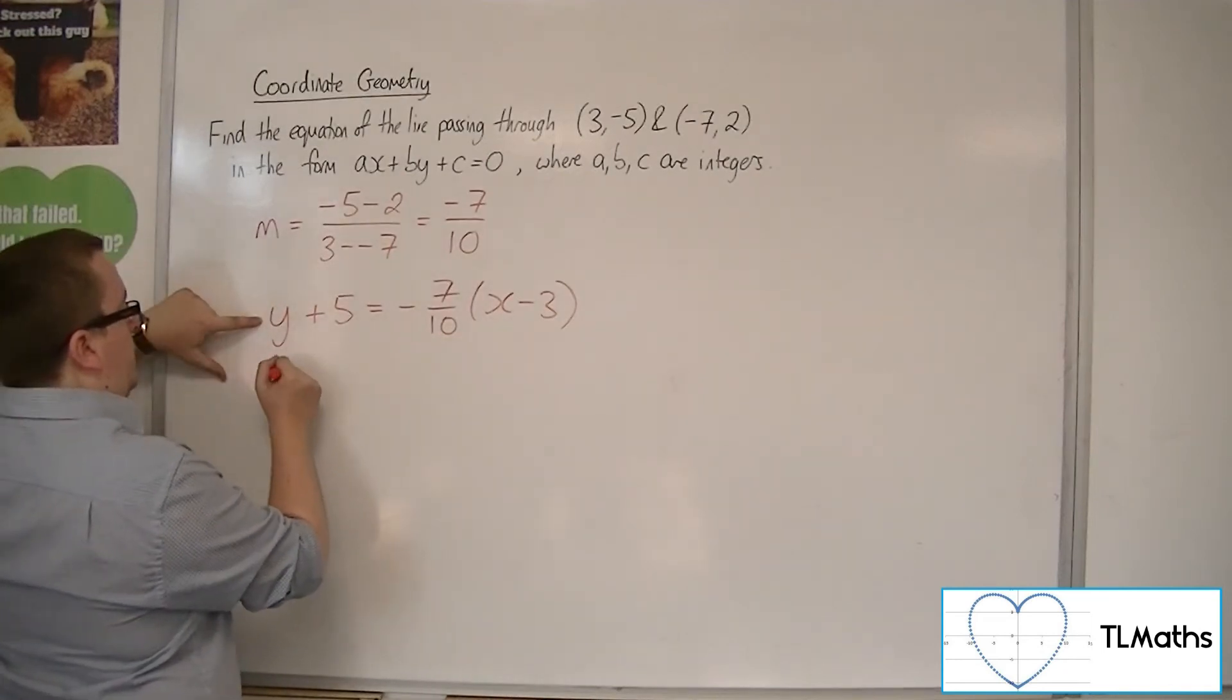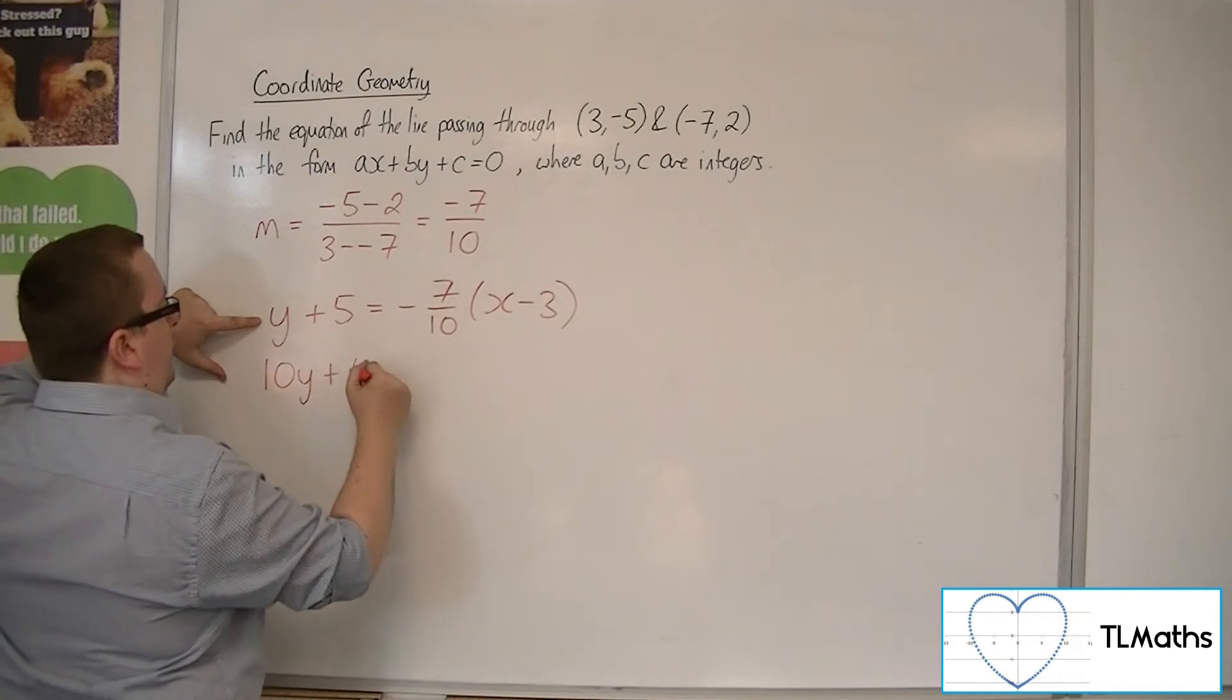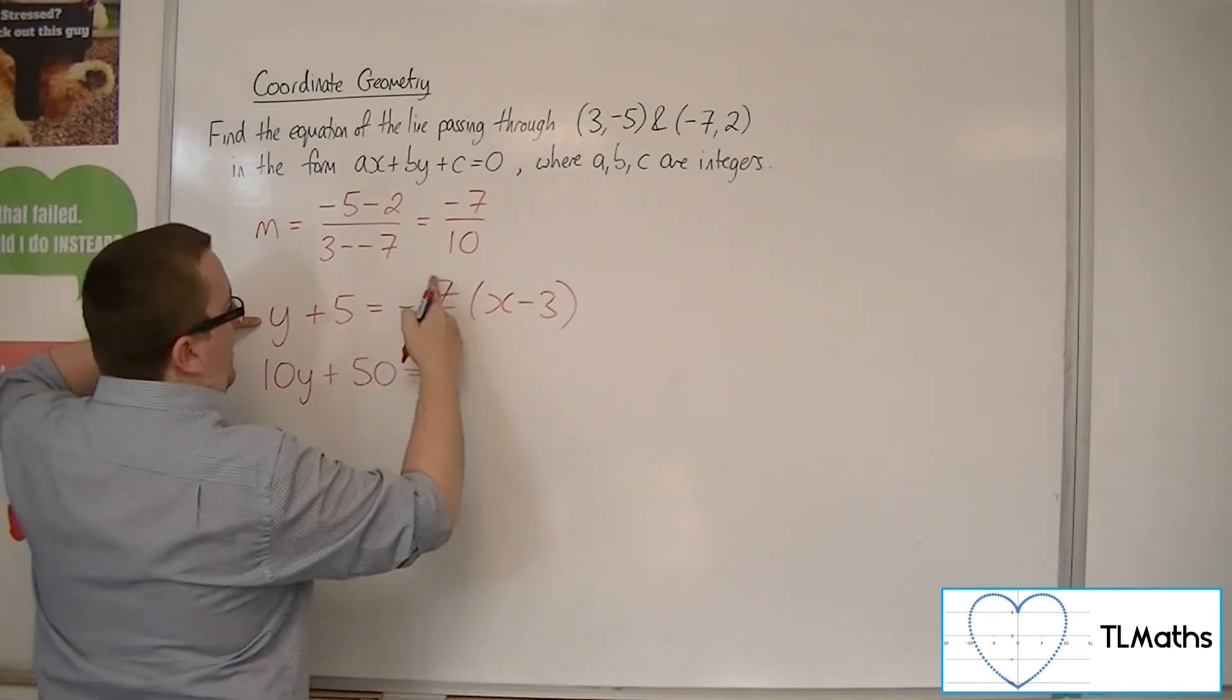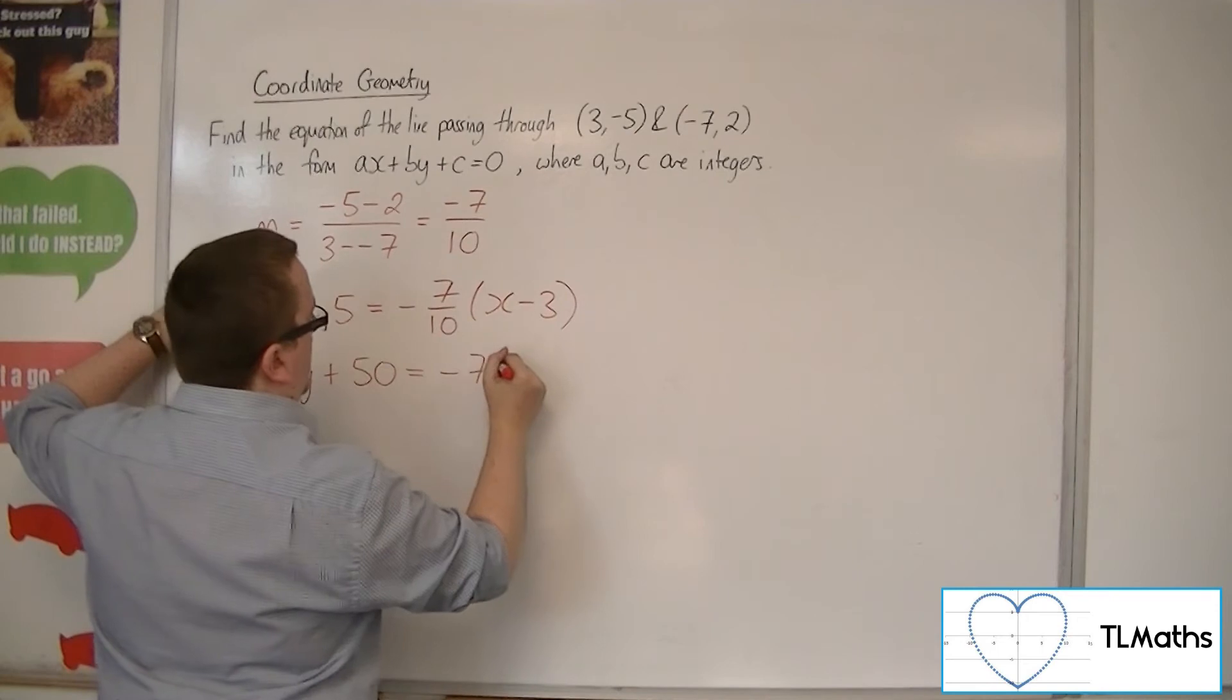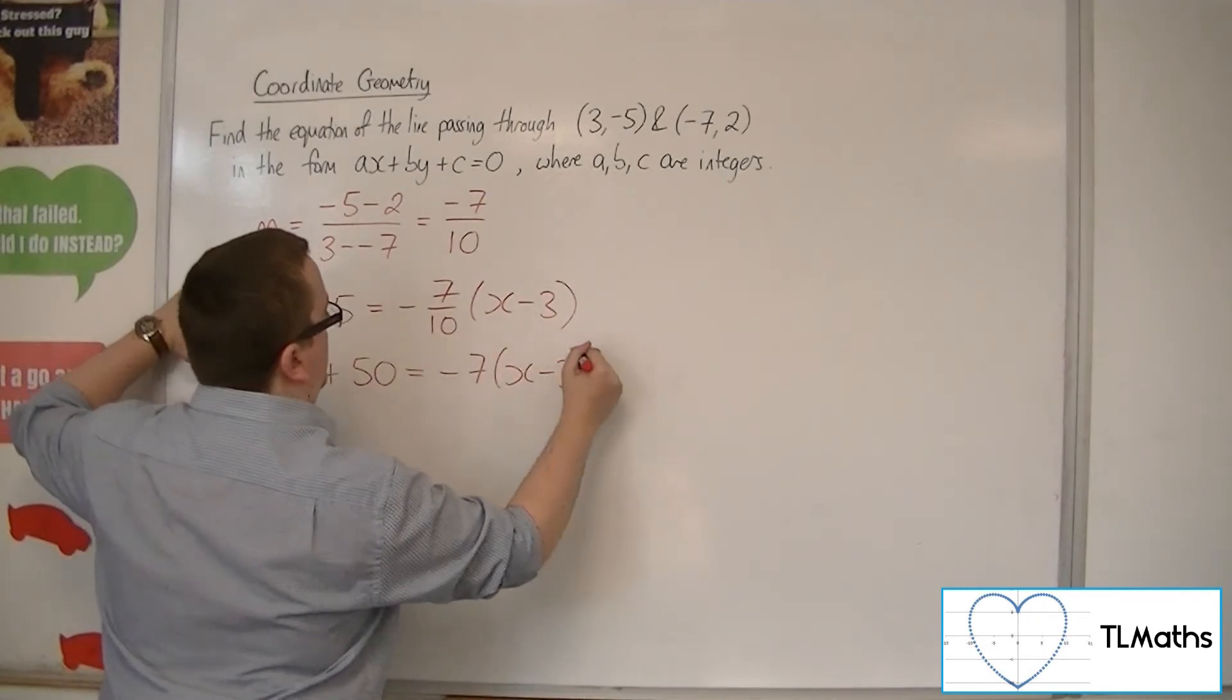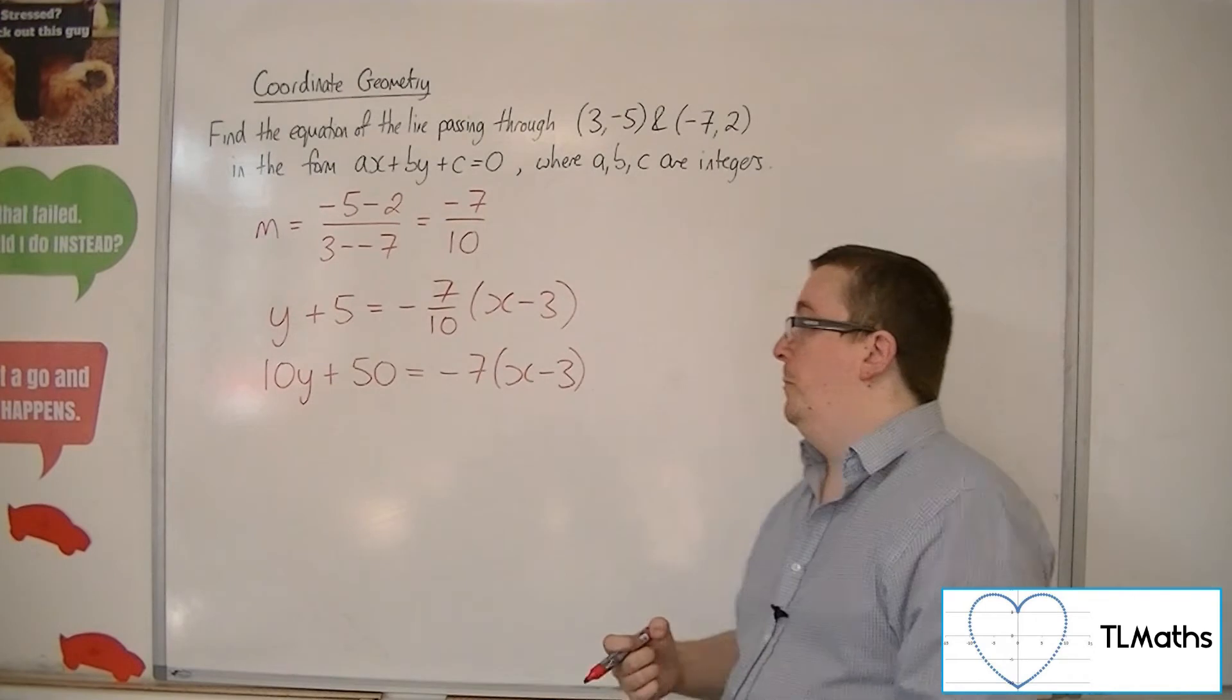I'm going to get 10y plus 10 lots of 5, so 50. 10 lots of this is -7, lots of x minus 3. That is multiplying both sides by 10.